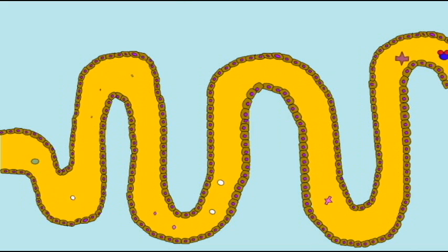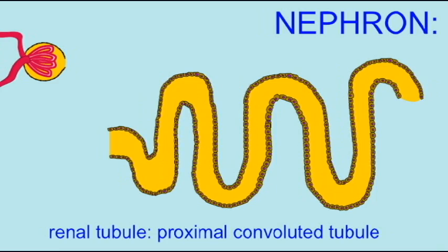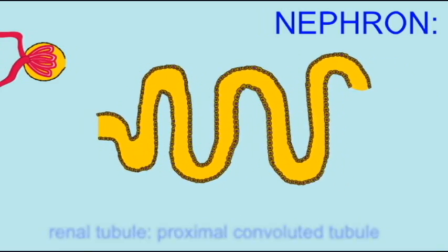The descending loop of Henle is where water is reabsorbed. The ascending loop of Henle is where salt is reabsorbed. And these three sections undergo what's known as obligatory reabsorption.